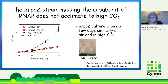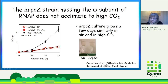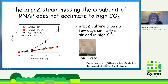Delta-RPOZ cells that are missing the tiny omega subunit of RNA polymerase do not acclimate to high CO2, practically not at all. When we grow those cells in normal ambient air, they grow similarly to the wild-type control strain cells. But when we transfer cells to high CO2 — 3% CO2 — the control cells grow much faster than in ambient air, whereas these Delta-RPOZ cells do not grow faster.